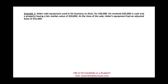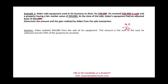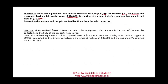Example one: Aidan sold equipment used in his business to Alvin for $40,000. He received $20,000 in cash and property with a fair market value of $20,000 — $40,000 total. At the time of the sale, Aidan's equipment had an adjusted basis of $31,000. Amount realized is $40,000 minus the adjusted basis of $31,000 gives a realized gain of $9,000.